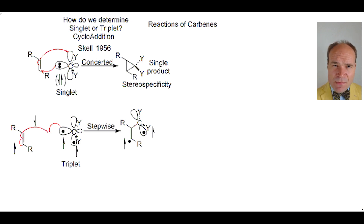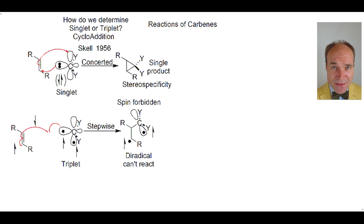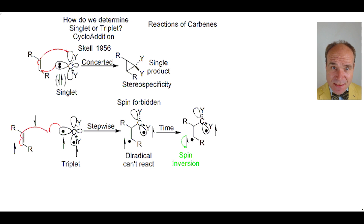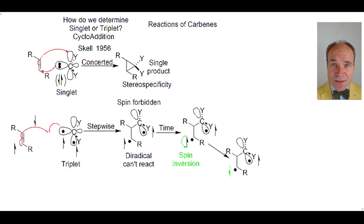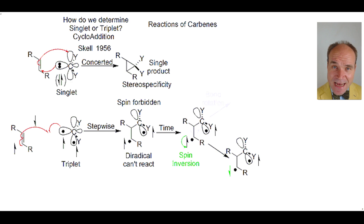The remaining radicals originating from the alkene and the carbene are the same spin state. Thus they are spin-forbidden and cannot form a bond together. One of the electrons can be spin-inverted. Now the two electrons are of opposite spin, so they can react. However, the spin inversion takes a significant period of time, and during the inversion the single bond that was previously the double bond of the alkene can rotate.